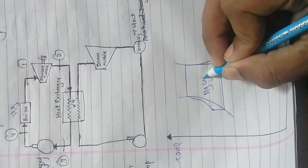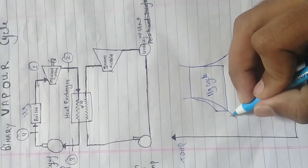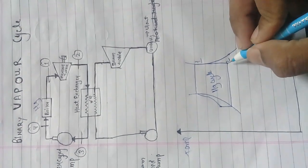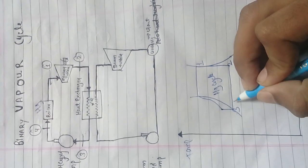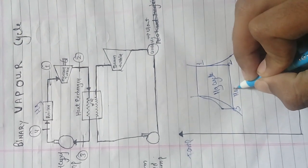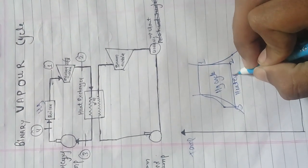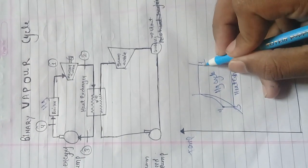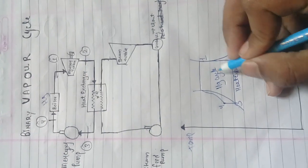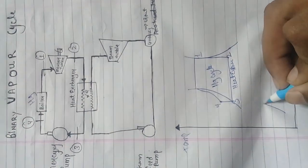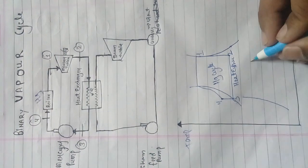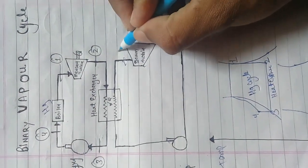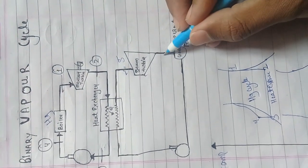For the mercury (Hg) cycle: from one to two is the turbine work, two to three is the condenser or heat exchanger work, three to four is the feed pump work, and four to one is the boiler work. Now we draw the steam cycle: five to six is the turbine work.